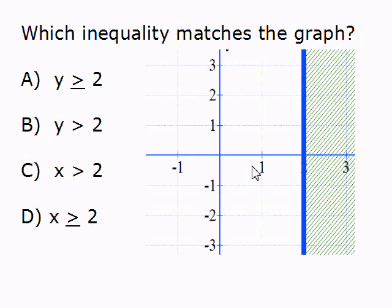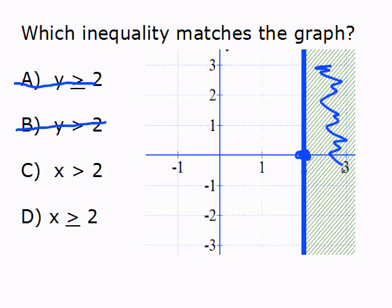Here's one for you to try. Go ahead and pause the video, give it a try, and press play when you're ready to see the answer. The graph has a vertical line through the x-axis at 2. Since it's hitting the x-axis at 2, we know it has to be x is greater than or x is less than some number, so we can immediately cross out answer choices A and B. Since it's shaded to the right towards numbers bigger than 2, we know it's greater than. And since the line is solid, we know it's greater than or equal to.